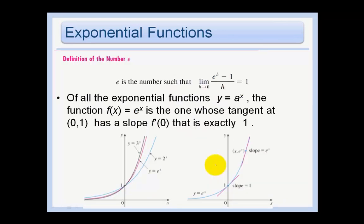This leads us to this definition. E is a number such that the limit as h equals 0 of e to the h minus 1 all over h equals 1. Of all the exponential functions, y equals a to the x, the function f(x) equals e to the x is the one whose tangent at (0, 1) has a slope f prime of 0 that is exactly 1.